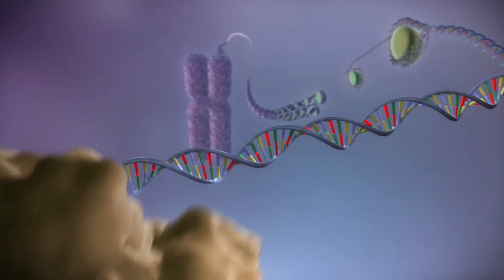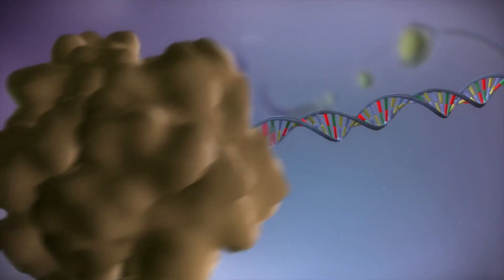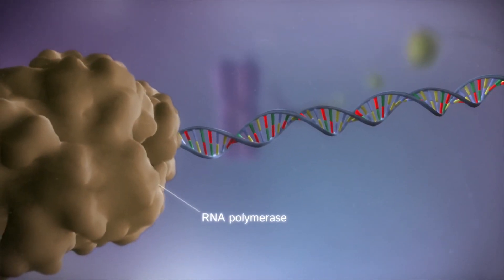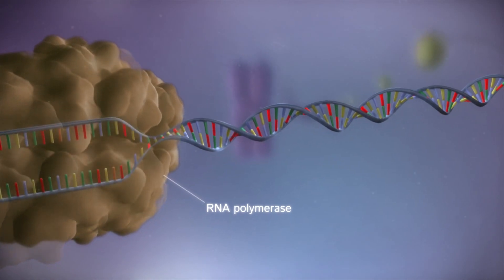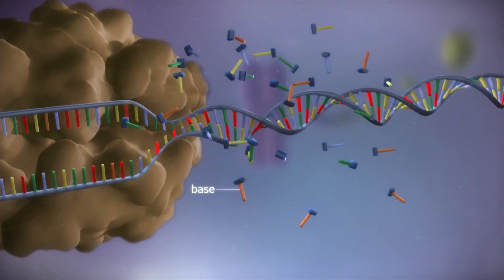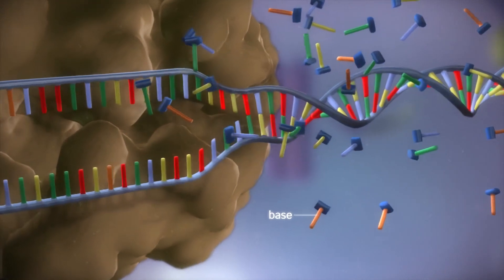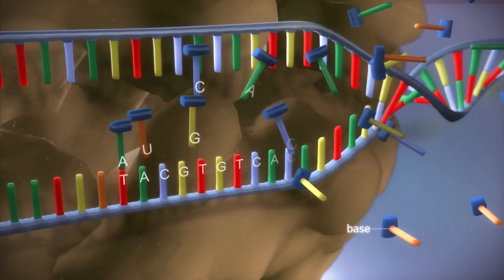When a gene is switched on, an enzyme called RNA polymerase attaches to the start of the gene. It moves along the DNA, making a strand of messenger RNA out of free bases in the nucleus.